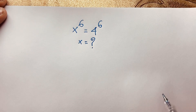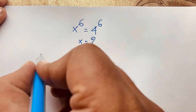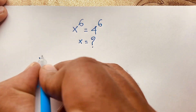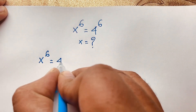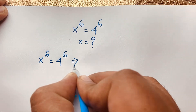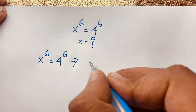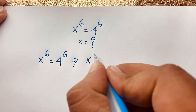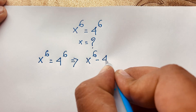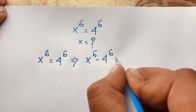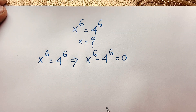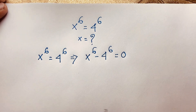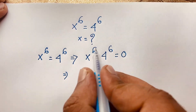Let's start. First of all, our question: x to the power six is equal to four to the power six. Now at this moment, I move four to the power six to the other side, so this expression becomes x to the power six minus four to the power six is equal to zero, where it will be negative four to the power six.